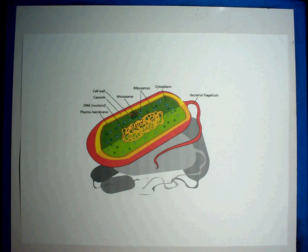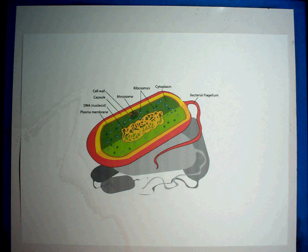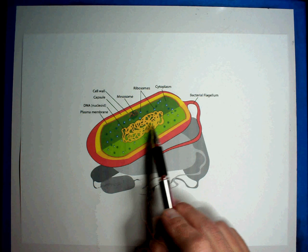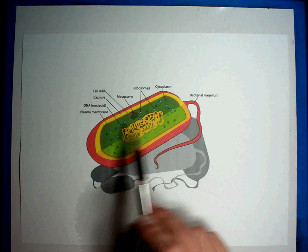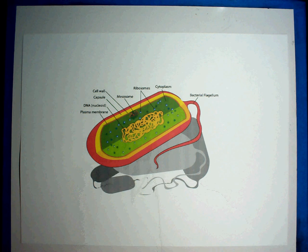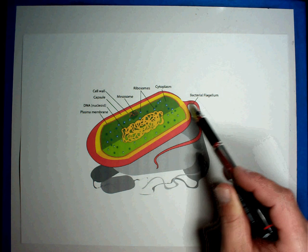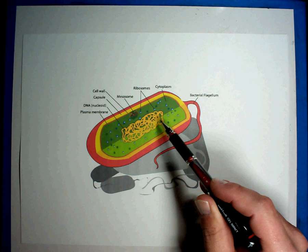A couple of things that I want to mention about the bacteria. You'll notice it does have a cell wall. It does have some genetic material inside, some DNA. It has a plasma membrane. It also has ribosomes. So it can survive. It's not near as complex as cells like in you and me, but it's pretty complex.